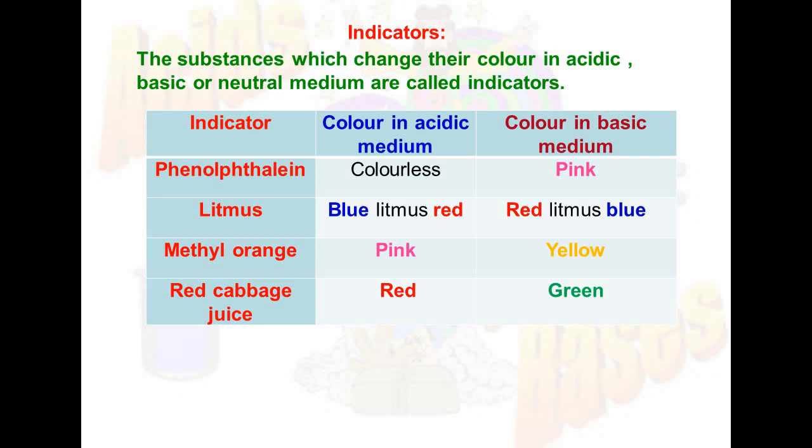Phenolphthalein, which itself is colorless, remains colorless in acidic medium but in basic medium it turns pink. Litmus solution: blue litmus turns red in acidic medium and red litmus turns blue in basic medium. Methyl orange, which itself is orange in color, turns pink in acidic medium and yellow in basic medium. Red cabbage juice turns red in acidic medium and green in basic medium.